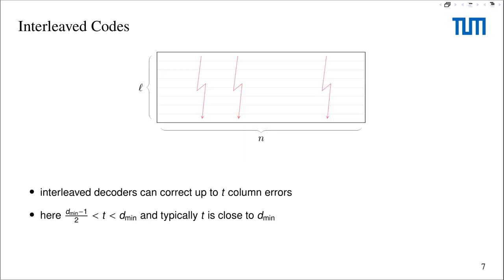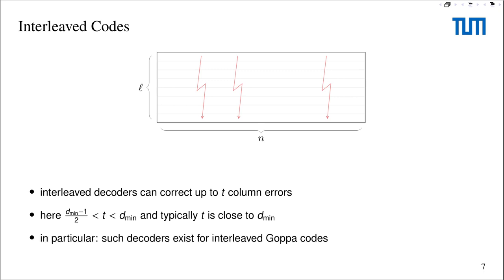Now let me explain why this construction is interesting. Let's say we have an L interleaved codeword with some errors, and all these errors are confined to exactly T columns — so this matrix has exactly T column errors. It turns out that for certain codes, there are interleaved decoders that can correct a lot of column errors, generally much larger than the unique decoding radius of the constituent code. In fact, it can be quite close to the minimum distance of the constituent code, as long as the interleaving order is not too small.